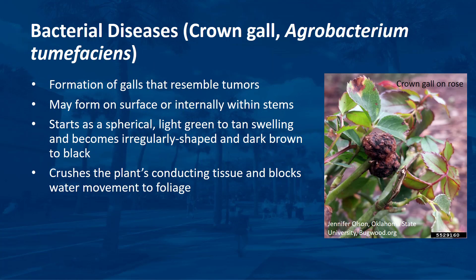Crown gall is characterized by the formation of galls that resemble tumors. Galls may form on the surface of stems or internally within stems, causing large swollen sections. Galls can also form on roots. The first observable symptom is swelling of the plant tissue, usually associated with a wound, and therefore the initial swelling is often dismissed as normal callus formation.